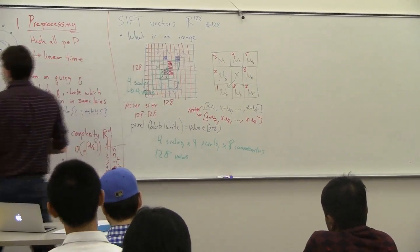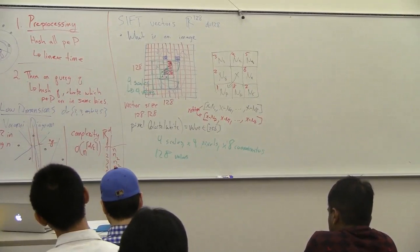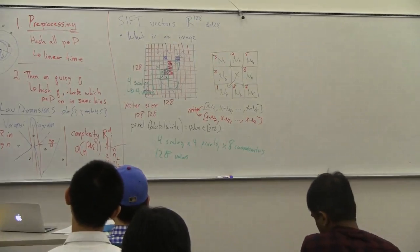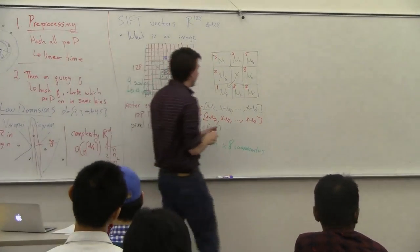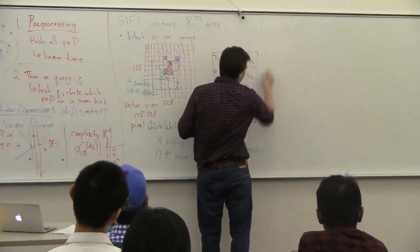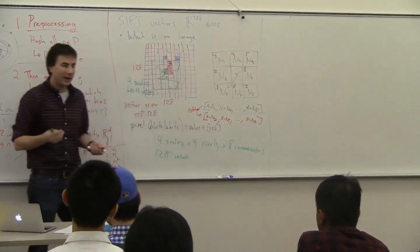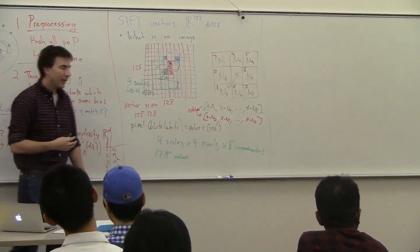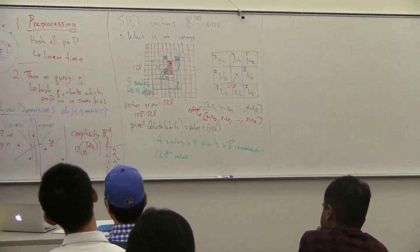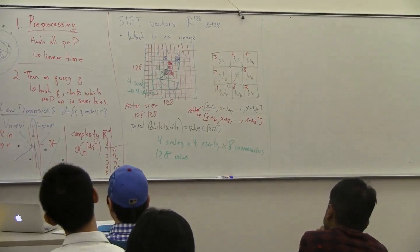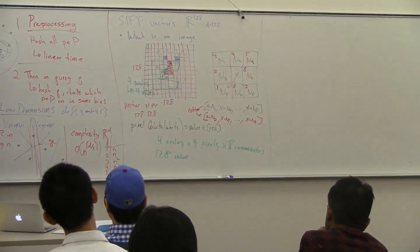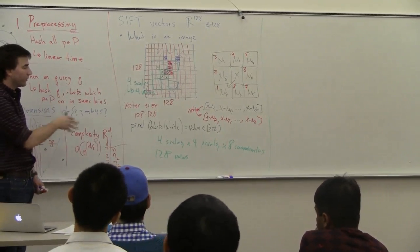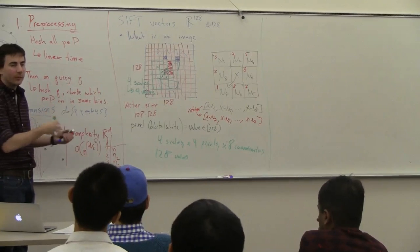You actually want to solve the nearest neighbor problem when your dimension is 128-dimensional space. Hopefully that gives you an idea of how you get a high-dimensional vector. They usually use the Euclidean distance as the distance between these features. There are other techniques for doing this, with some other variations, but they give you some similar structuring.